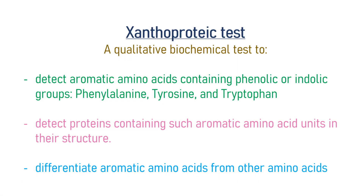The Xanthoproteic test is a qualitative biochemical test to detect and differentiate aromatic amino acids containing phenolic or indolic groups, such as phenylalanine, tyrosine, and tryptophan, from other non-aromatic amino acids. It is also used to detect the presence of proteins containing such aromatic amino acid units in their structure.